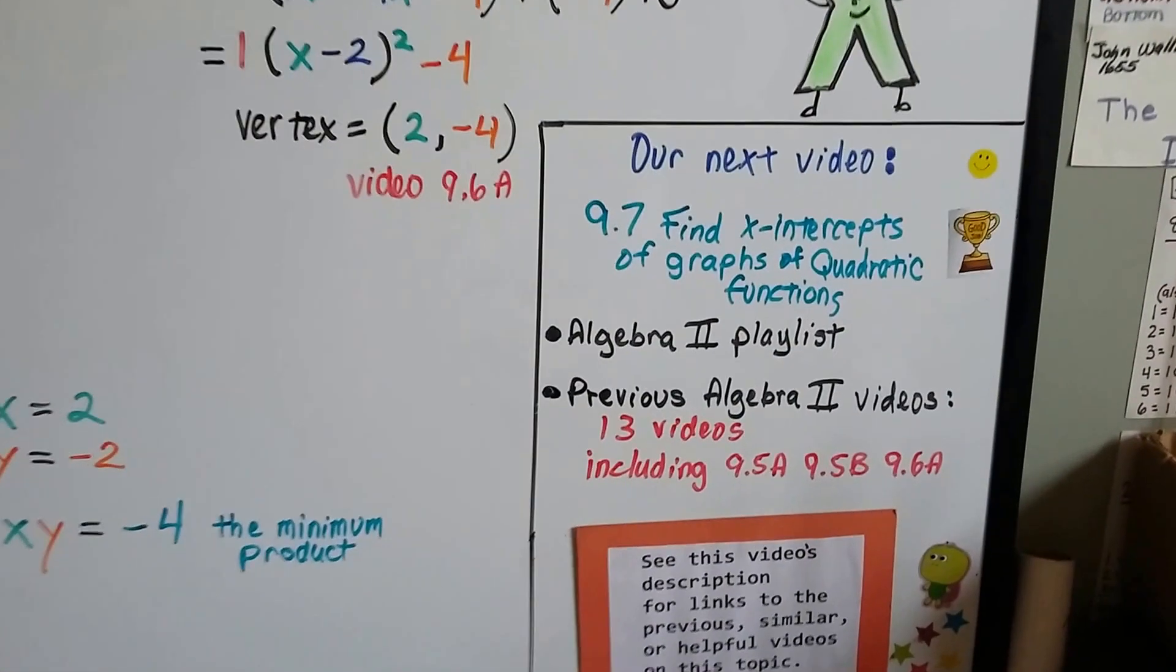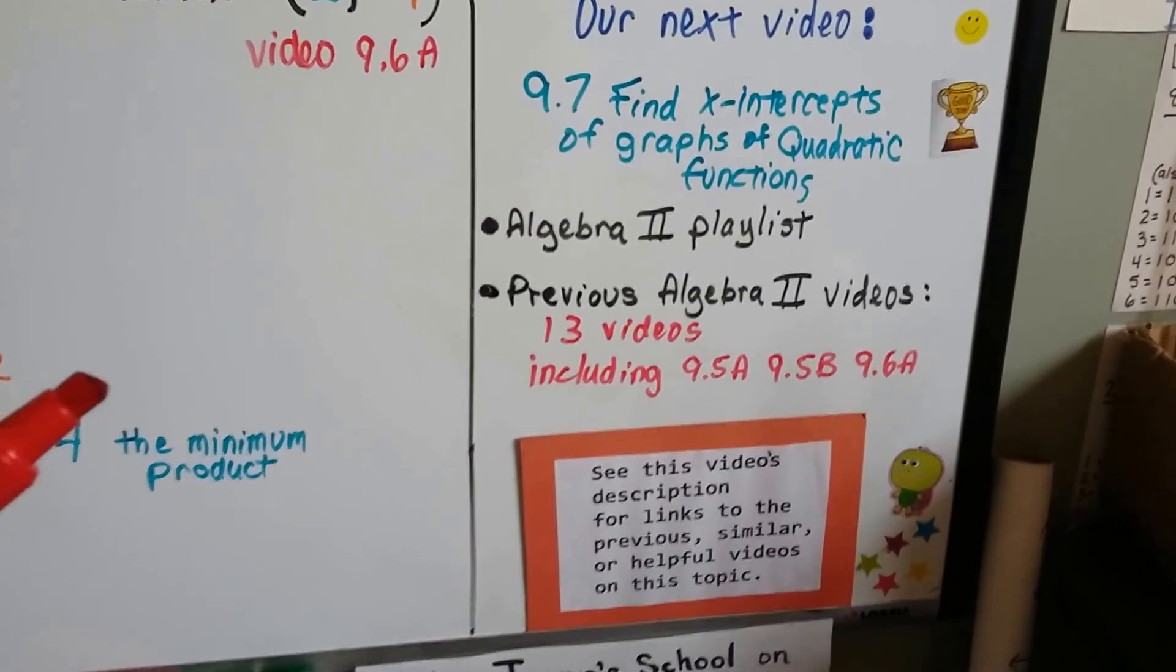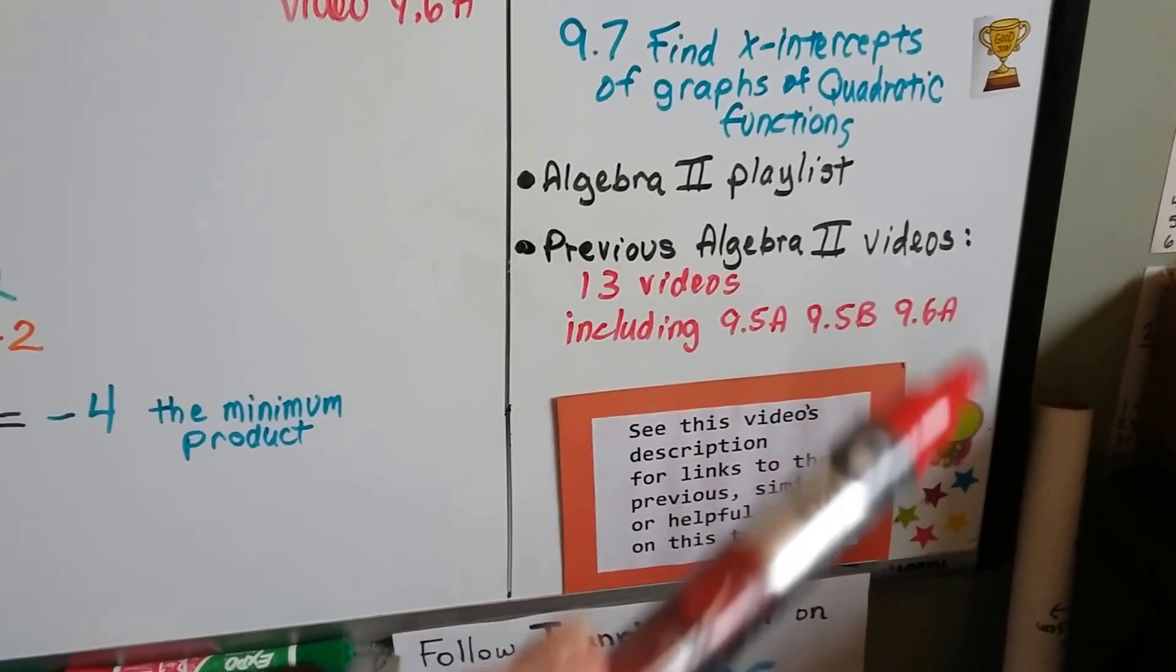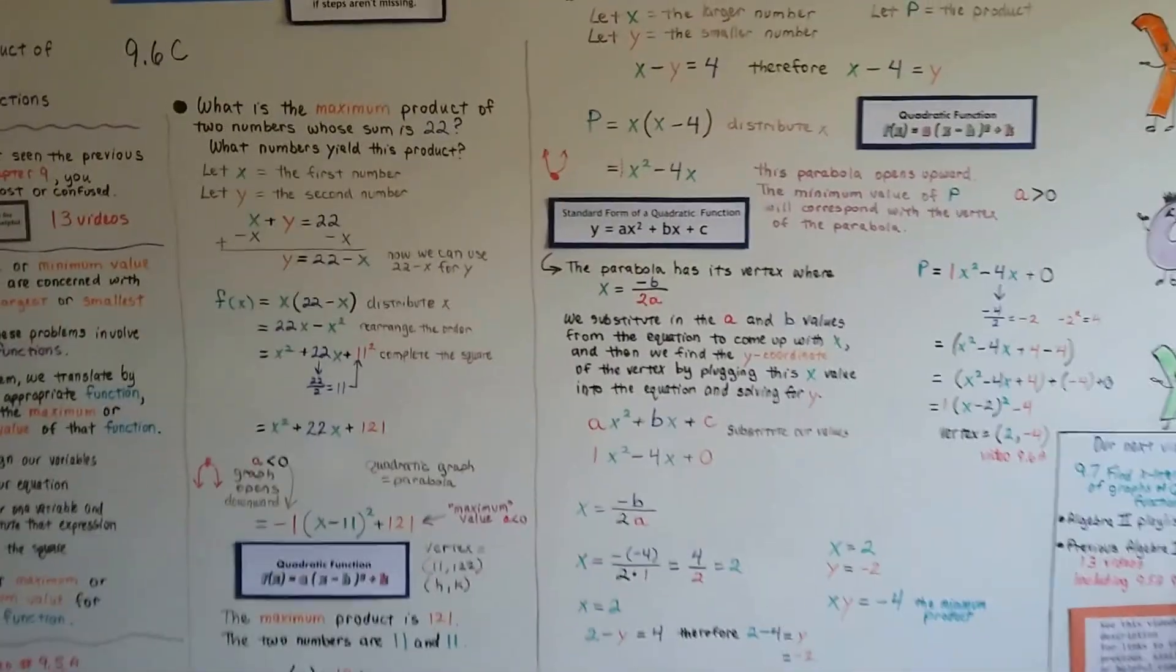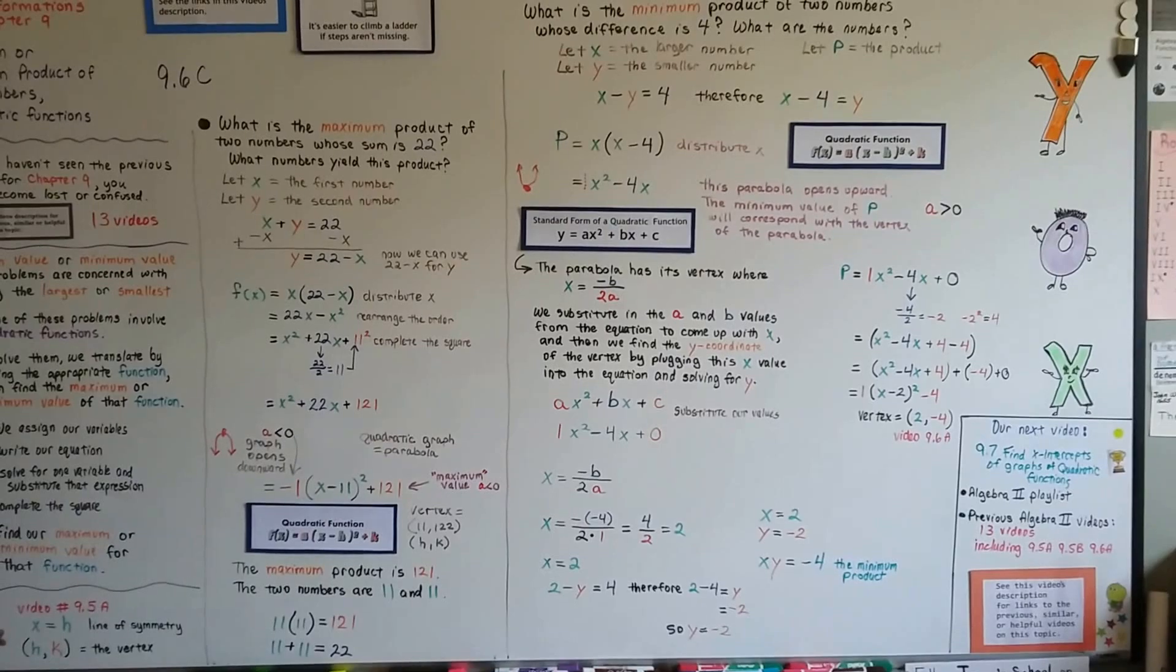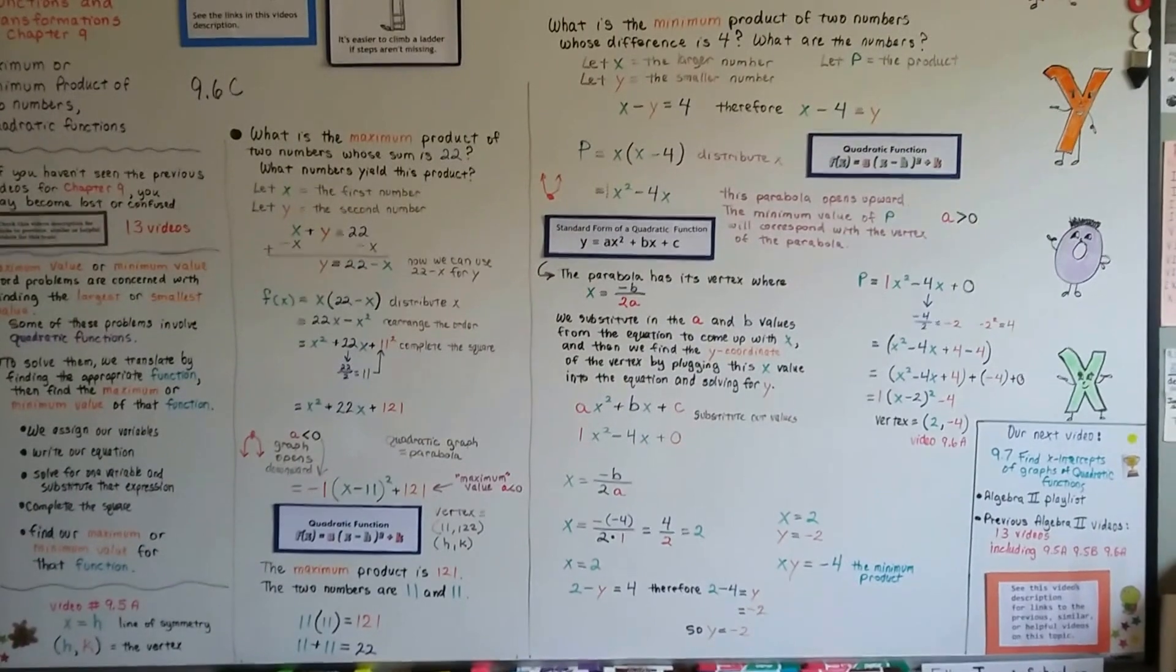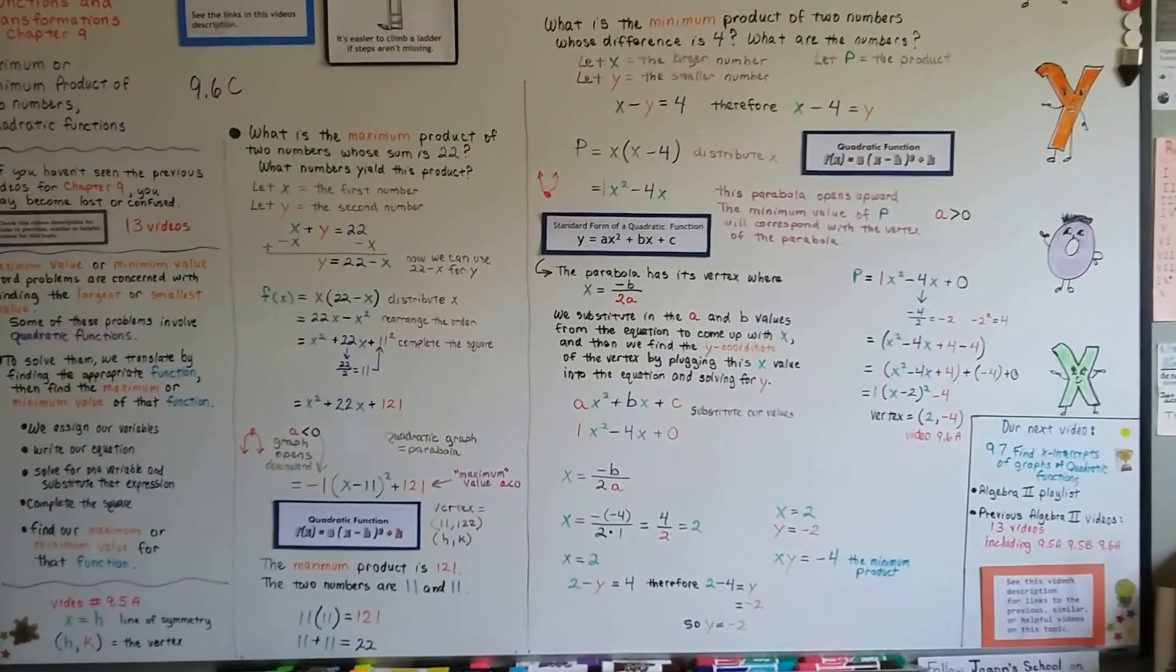Our next video is 9.7, and we're going to talk about how to find x-intercepts of graphs of quadratic functions. I'm going to add this video to the Algebra 2 playlist. There's 13 videos now for Chapter 9, and these three videos, 9.5a, b, and 9.6a, are really important to understanding this maximum and minimum value thing we've been talking about. I hope this made sense to you. I know minimum products of two numbers that have a difference can be very confusing, so whichever way you feel comfortable solving it is fine, depending on what your teacher wants. I'll see you next video. Keep trying. I believe in you.